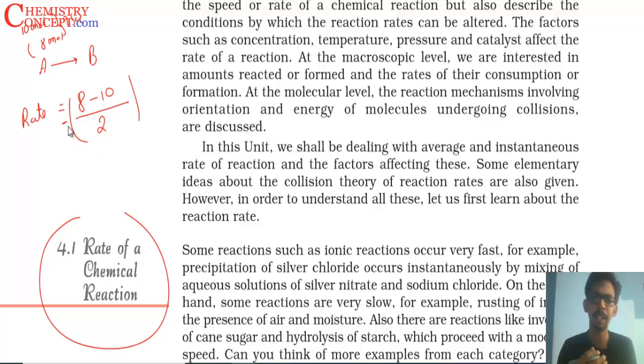Why do we put a negative sign? To make the rate of reaction positive. Rate of reaction is never negative. So this will be 1 mole per second. For example, if I had taken concentration, it would be 1 mole per liter per second. This is how we find out the rate of a reaction.